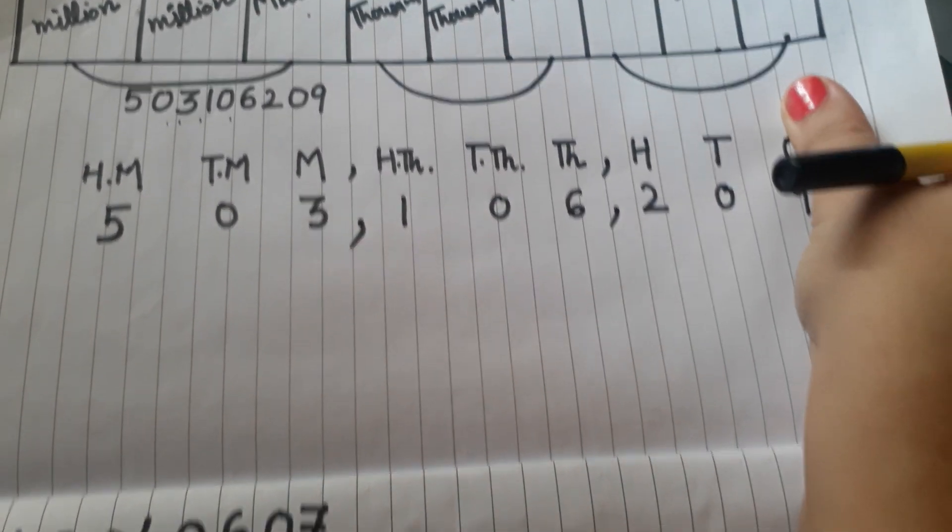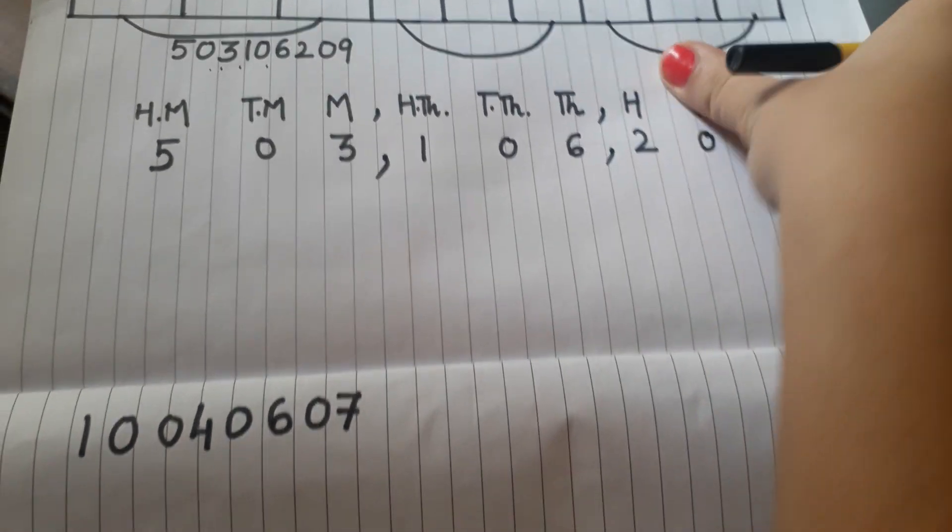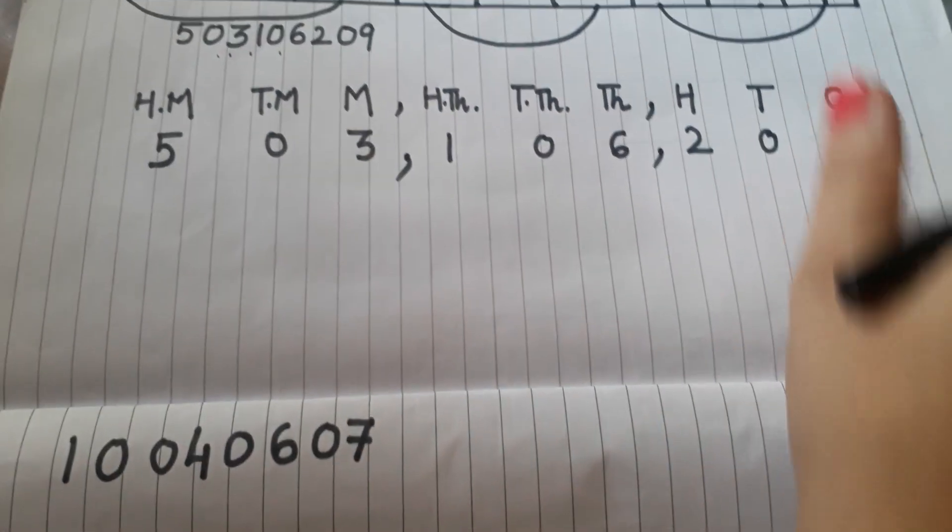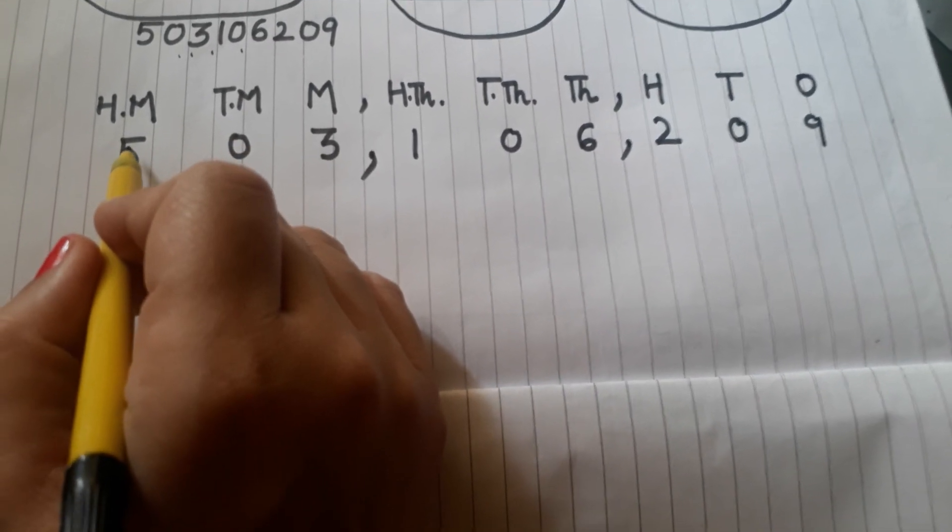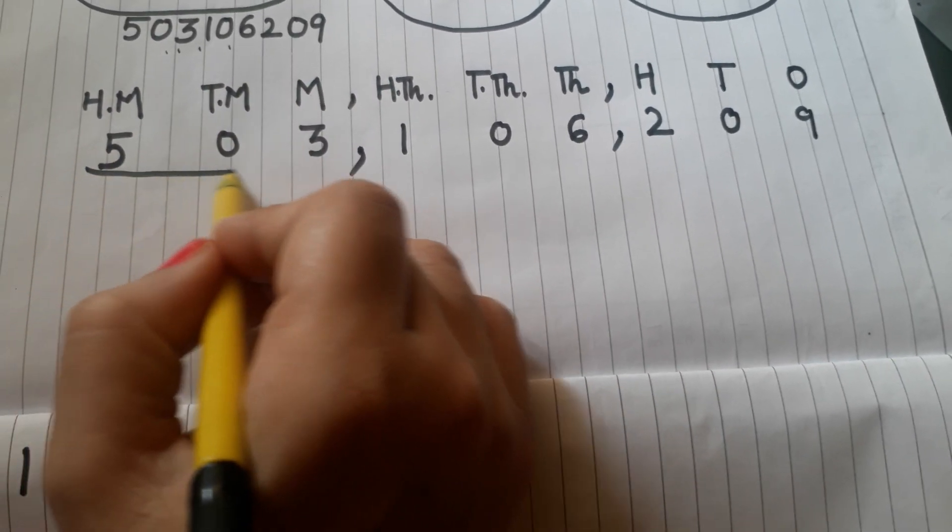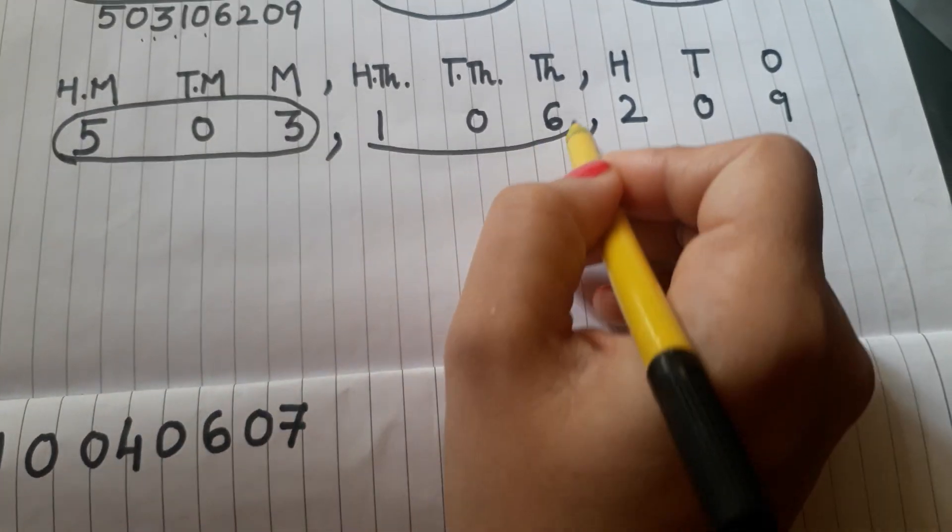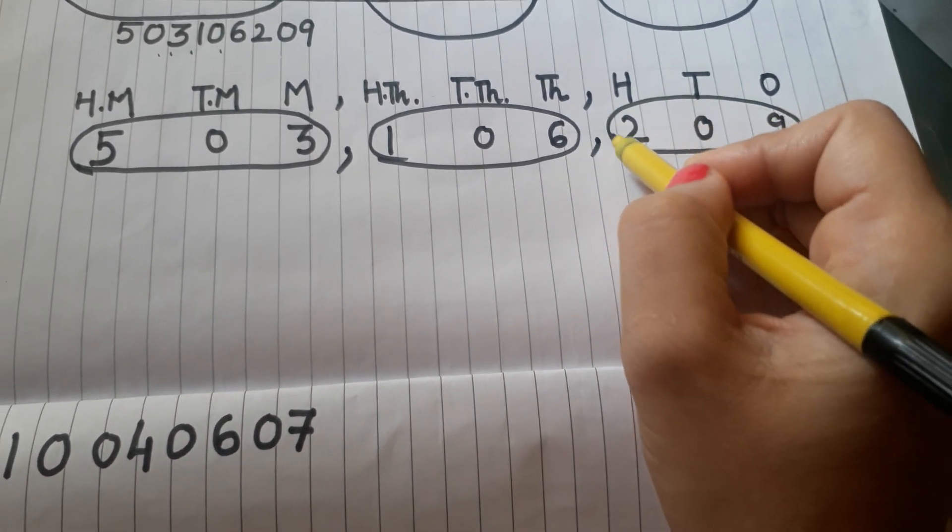In this way we write the number. But how do we write it in words? We don't write like 500 million, 0, 10 million. No. We have to write the words together. Like this: